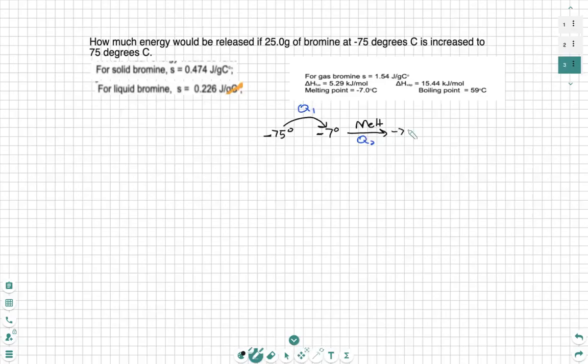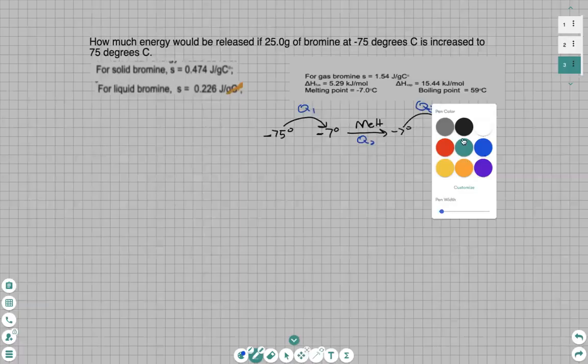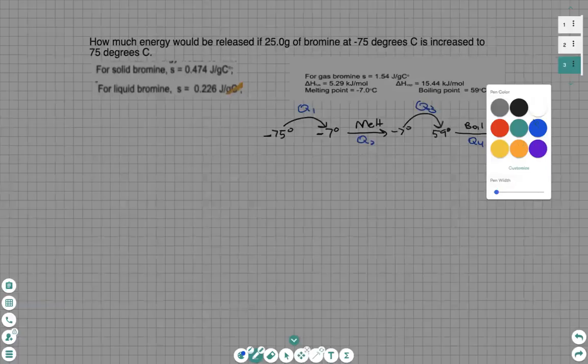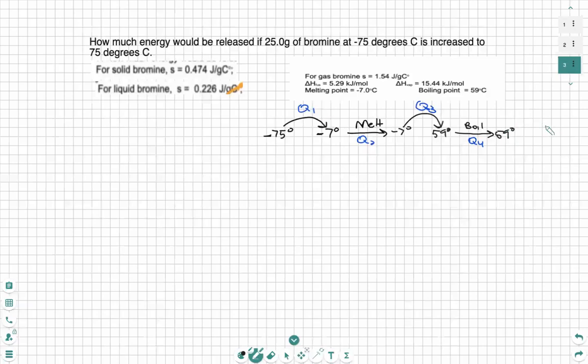Next, since we're still at negative 7 degrees Celsius, I need to bring that now to its boiling point at 59 degrees Celsius. This is going to be Q3. At 59 degrees Celsius, we boil. It doesn't change at the end of boiling. We have a phase change to be my Q4. Finally, we need to make that last jump to our final temperature of positive 75 degrees. This will be our Q5.